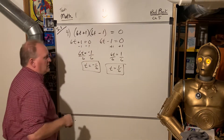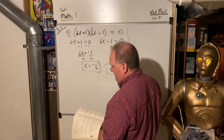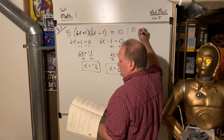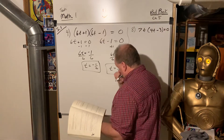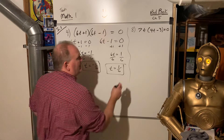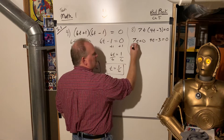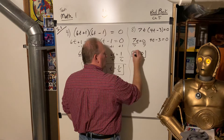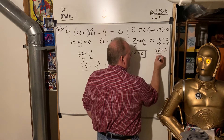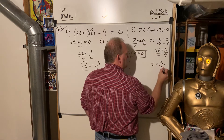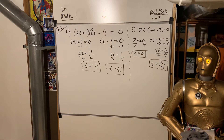Those are the two answers that will work — if you put them back in, they'll make a true statement. Let's get another problem. Number 8: we've got 7t times (4t − 3) equals 0. Again, you set up two equations: 7t equals 0, and 4t − 3 equals 0. So 7t equals 0 — divide both sides by 7 — t equals 0. So 0 is one of the answers. Add 3 and divide by 4: t equals three-fourths is the other answer.